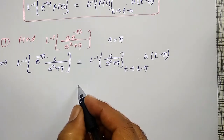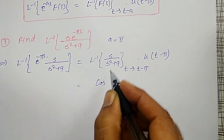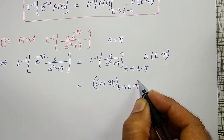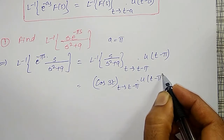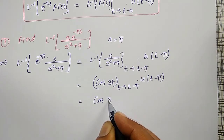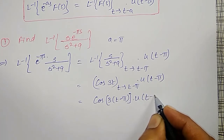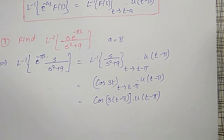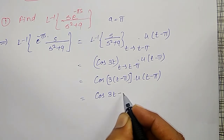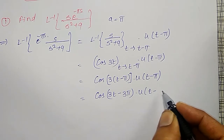Now, what is the inverse Laplace Transform of s divided by s squared plus 9? That is cos(3t). In this, t is replaced by t minus pi, into u(t minus pi), the unit step function. I will replace t by t minus pi: cos of 3 into (t minus pi) into u(t minus pi). Simplifying, I get the expression as cos(3t minus 3pi) into u(t minus pi).